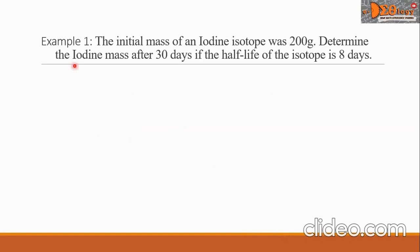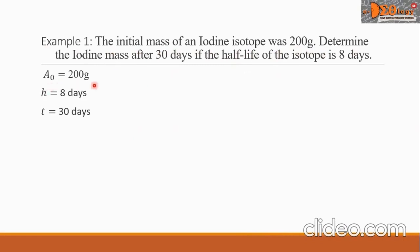Let us have Example 1. The initial mass of an iodine isotope was 200 grams. Determine the iodine mass after 30 days if the half-life of the isotope is 8 days. Let us collect the given: A-sub-zero equals 200 grams, H equals 8 days, and T equals 30 days.